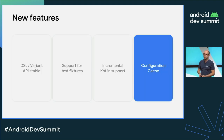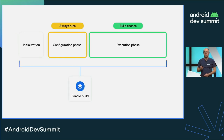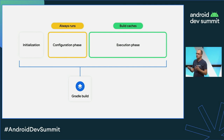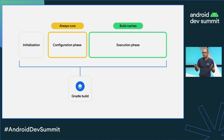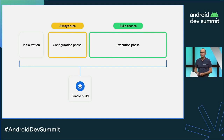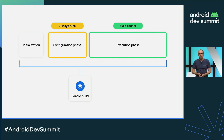I also want to talk about configuration cache. This is a feature we developed with Gradle and it's a huge improvement. The configuration phase is the stage in the Gradle build where we construct the task tree — all the tasks that need to run — and it takes time. Depending on the size of your project, it can become really slow: maybe a couple of seconds, maybe 10 or 20 seconds. This was a cost you were paying every single time you built.